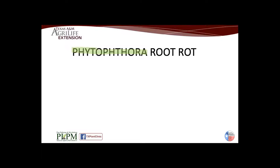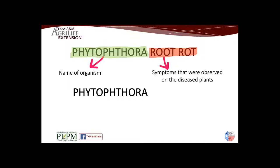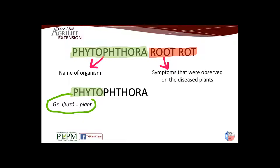Phytophthora root rot — that is the topic for the day. Phytophthora is just the name of the organism we're focusing on. Root rot describes the symptoms observed on the plant caused by that organism. What I just shared is a common name — Phytophthora root rot — basically describing the damage done by the organism called Phytophthora. If you don't know your Greek: phyto means plant, thora means decay or perish. That's why the trailer said 'plant destroyer.'